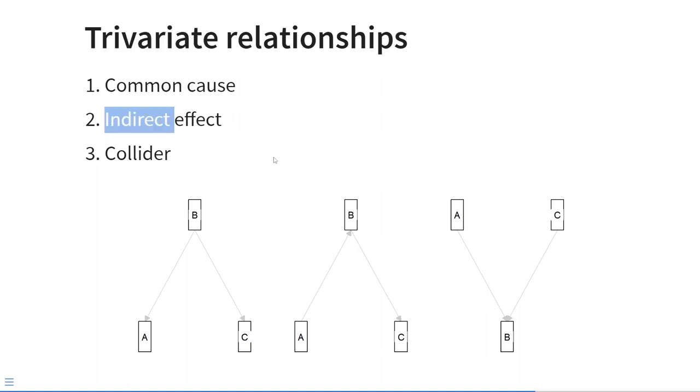The second possible situation is called an indirect effect. Here variable A has a causal effect on B, and B has a causal effect on C. So A has an indirect effect on C via B. So if I go up on A, that causes an increase in B, and that increase in B in turn causes an increase in C. And the third situation is what we call a collider. In this case, both A and C are causes of B. So these are two independent causes of the variable B.